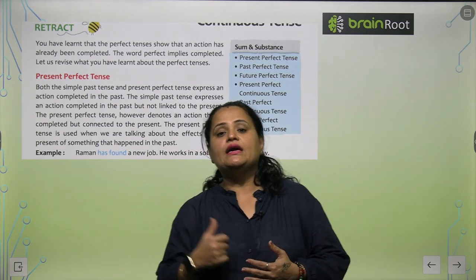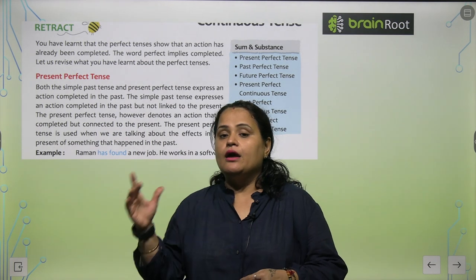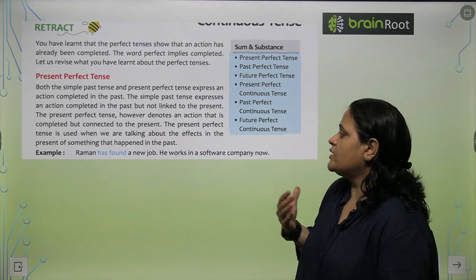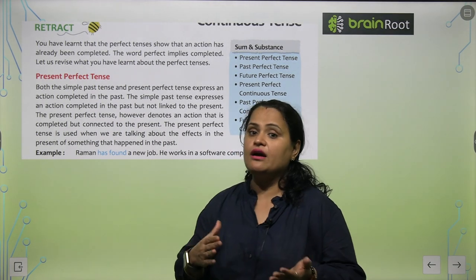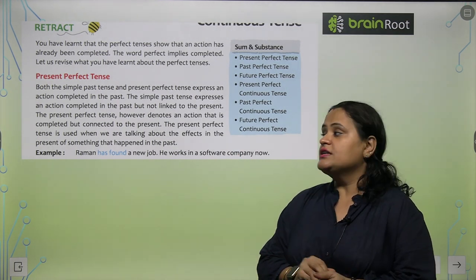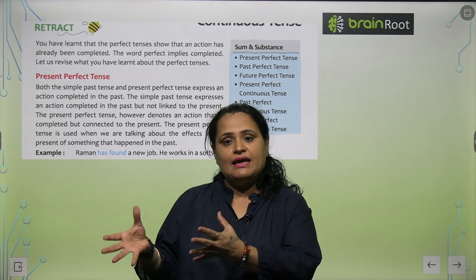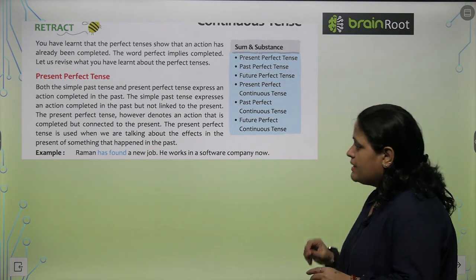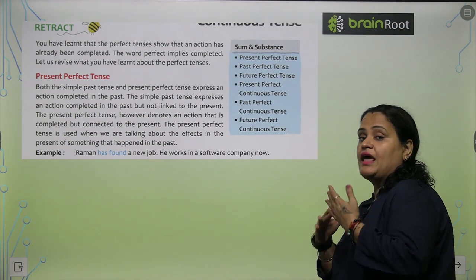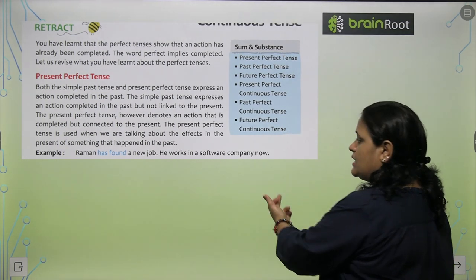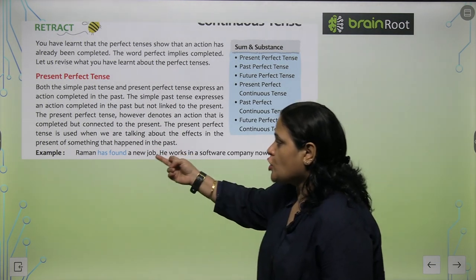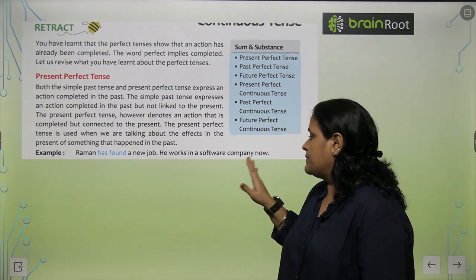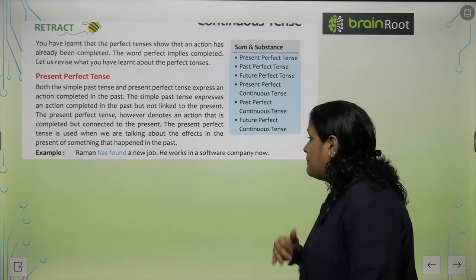Let us revise what you have learnt about the perfect tenses. We will cover present perfect tense, past perfect tense, future perfect tense, present perfect continuous tense, past perfect continuous tense, and future perfect continuous tense. The present perfect tense is used when we are talking about the effect in the present of something that happened in the past — jab hume yeh batana hai ke uske effect abhi bhi present mein hai. For example: Raman has found a new job — Raman ko job mil chuki hai. He works in a software company now. The action of finding a job is complete, but its effect still continues.